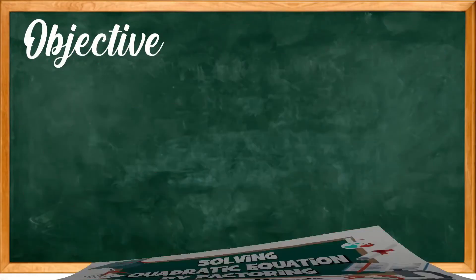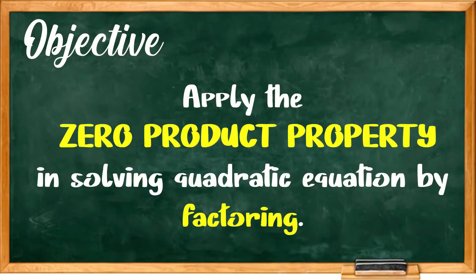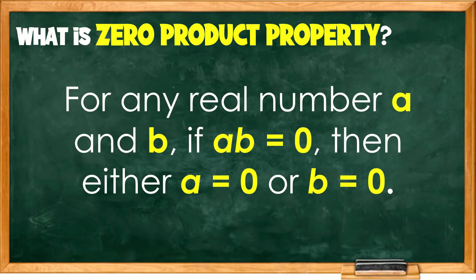For our objective, we are going to apply the zero product property in solving quadratic equations by factoring. But before that, what is the zero product property? Zero product property states that for any real numbers A and B, if A times B is equal to zero, then either A is equal to zero or B is equal to zero.